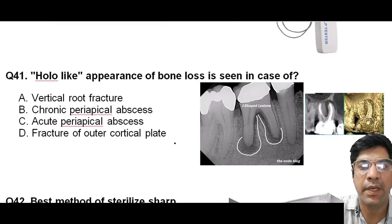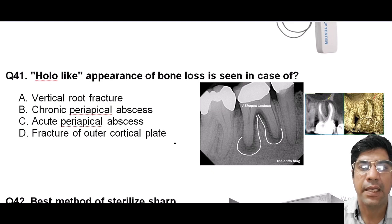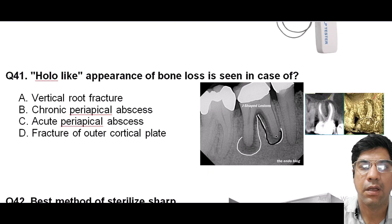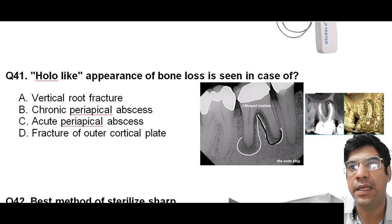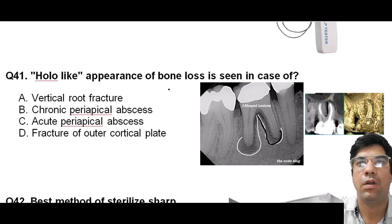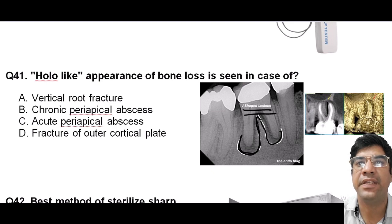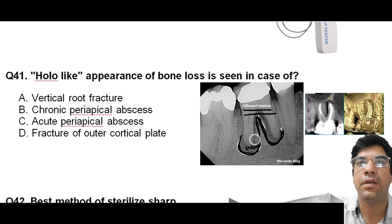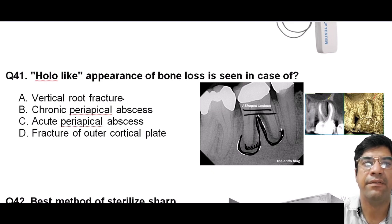The hollow-like appearance of bone is seen in vertical root fracture. Vertical root fractures are associated with a sharp irregular radiolucent line extending along the root length, typically showing a J-shaped radiolucency — a feature of vertical root fracture. Along with that, a hollow-like appearance is seen caused by inflammation, with bone loss associated with vertical root fracture.